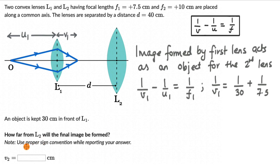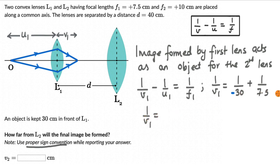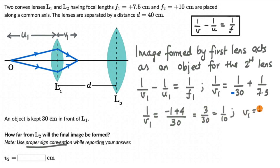We need to apply the sign convention, treating the optical center of L1 as the origin. Everything on the left-hand side is negative, on the right positive. So U1 is minus 30. Working out: 1/V1 equals (minus 1 plus 4)/30, which is 3/30, giving 1/10. So V1 equals plus 10 centimeters. This makes sense — the image forms 10 cm to the right of L1, consistent with the sign convention.